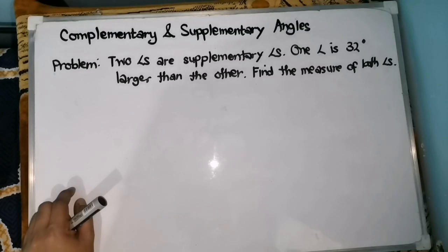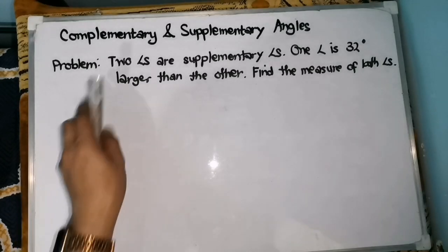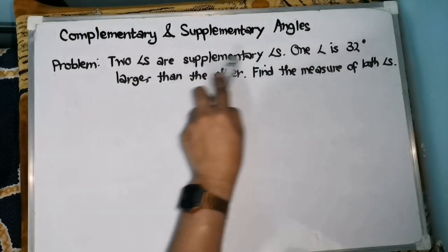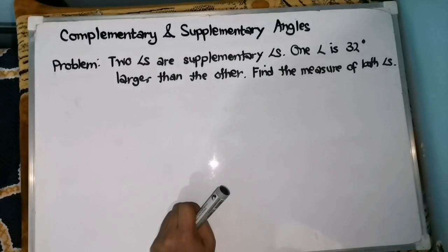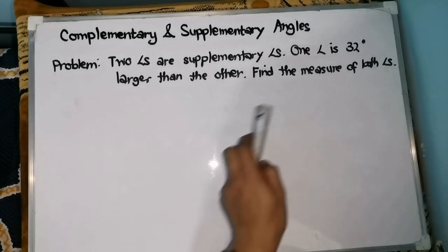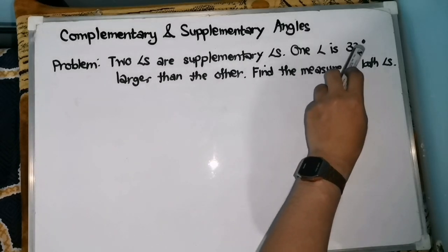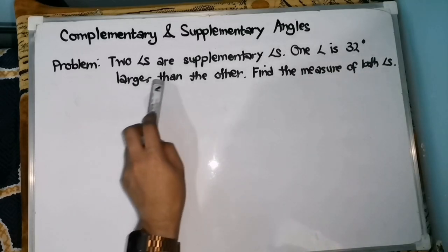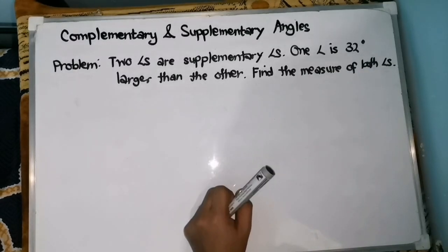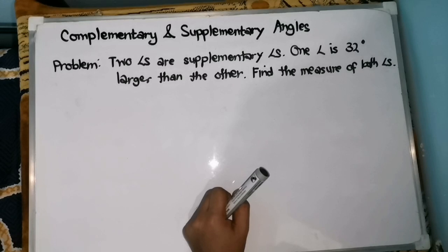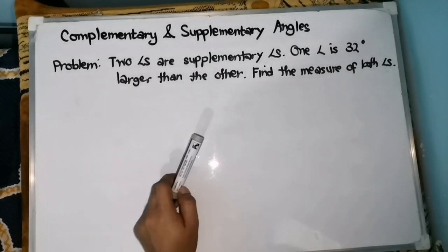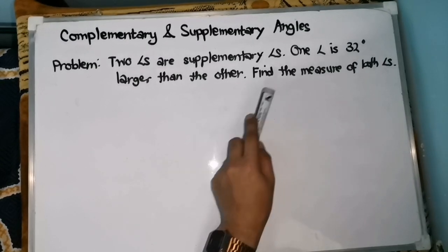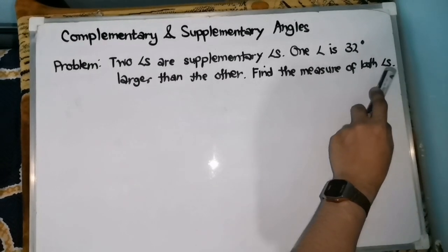Let's have our word problem. Two angles are supplementary angles. Therefore, when we add the two angles, the measurement should be equal to 180 degrees. One angle is 32 degrees larger than the other — meaning one angle is bigger by 32 degrees than the smaller angle. We need to find the measure of both angles.